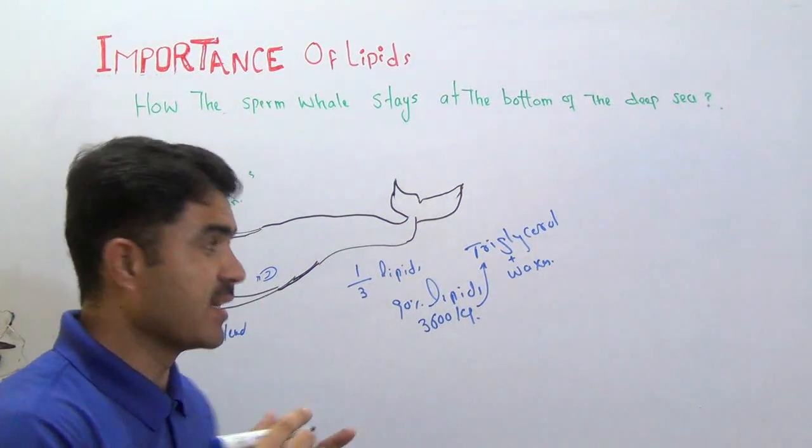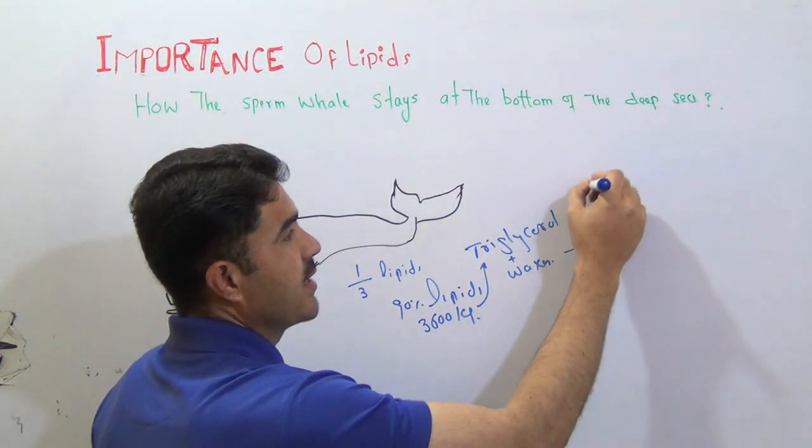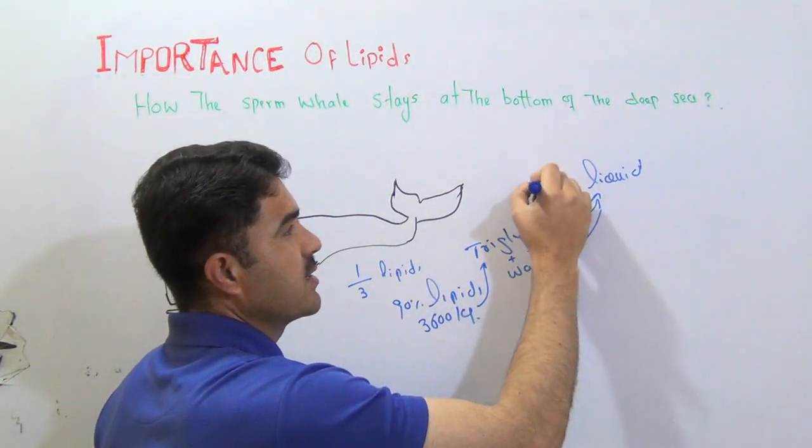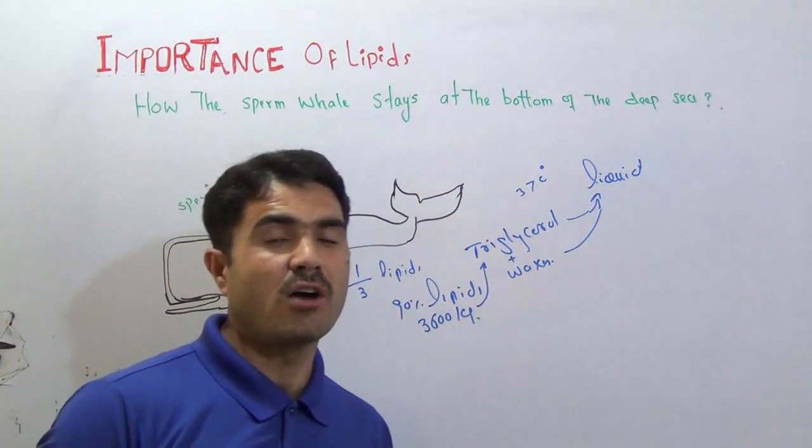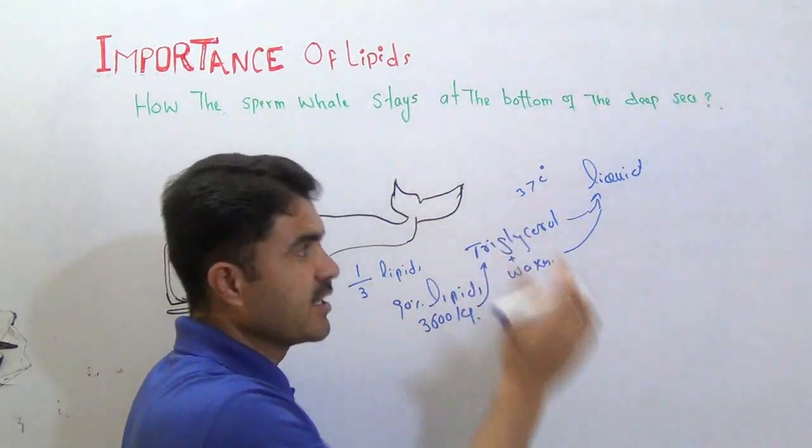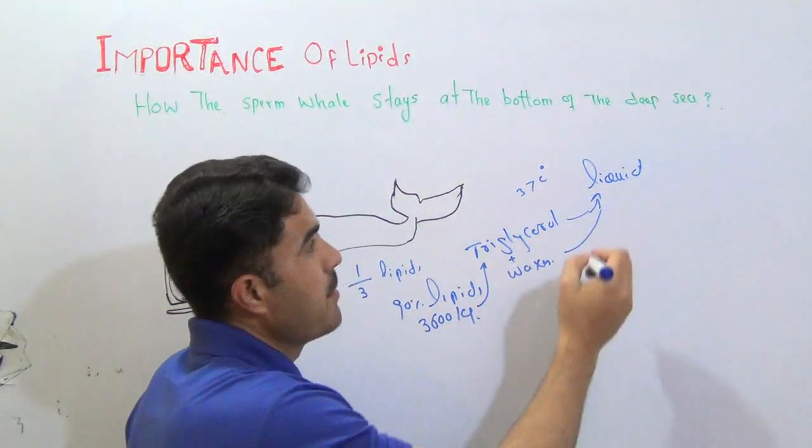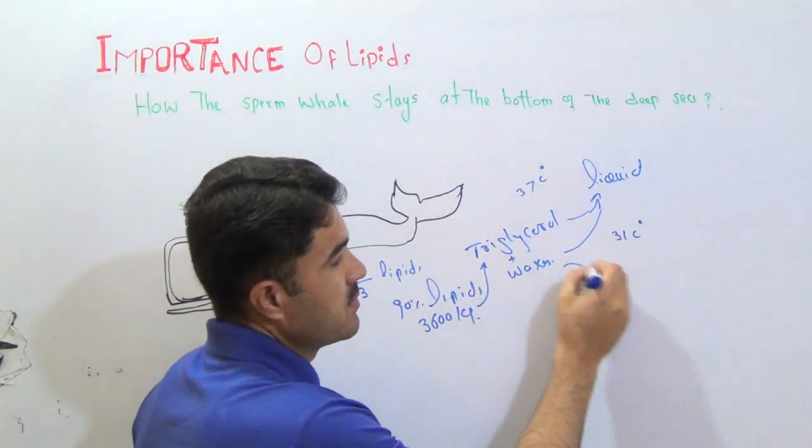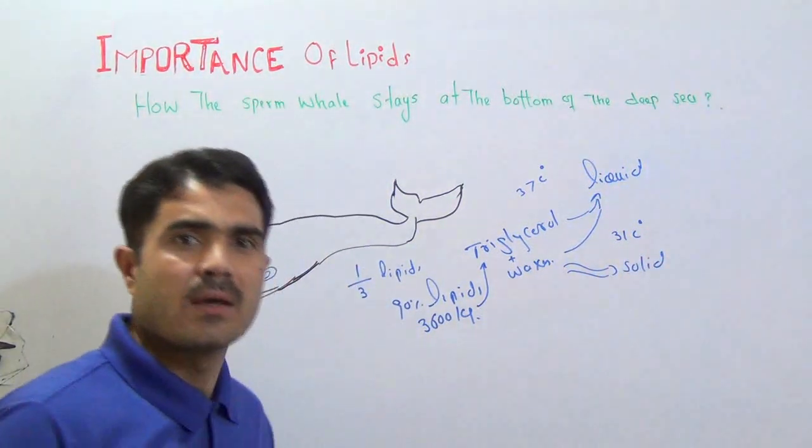The speciality of the lipid is that this lipid becomes liquid at the normal body temperature that is 37 degrees centigrade. According to the book of biochemistry, author is Leninger. 37 degrees centigrade that lipid is in liquid state. But when the temperature falls below 31 degrees centigrade, then it becomes crystallized, solid or congeal.